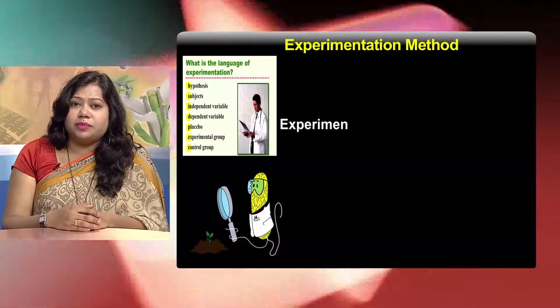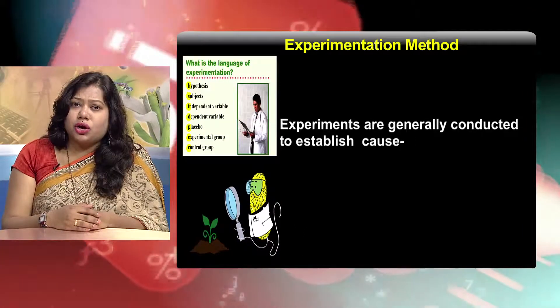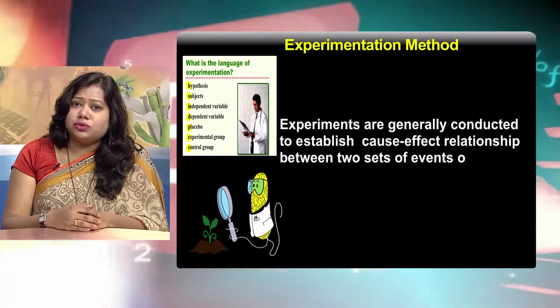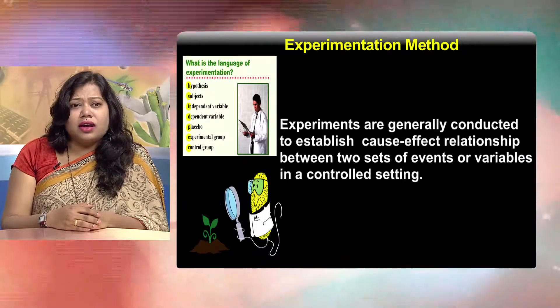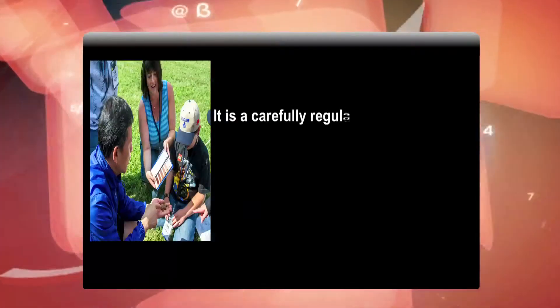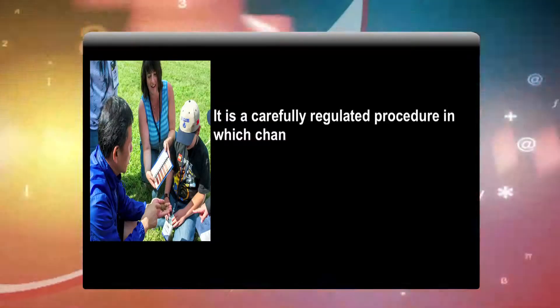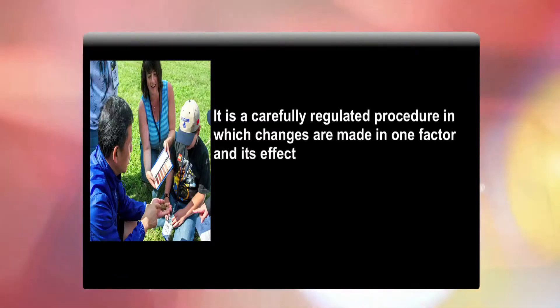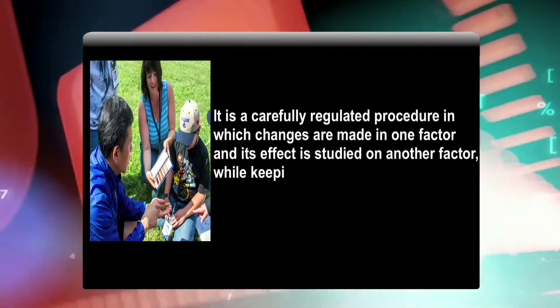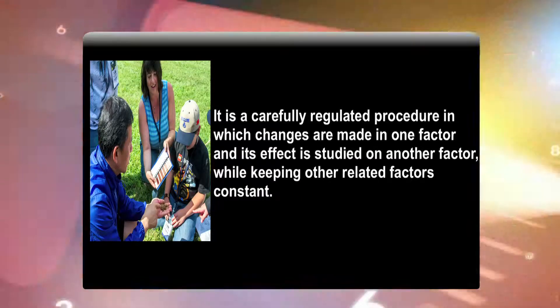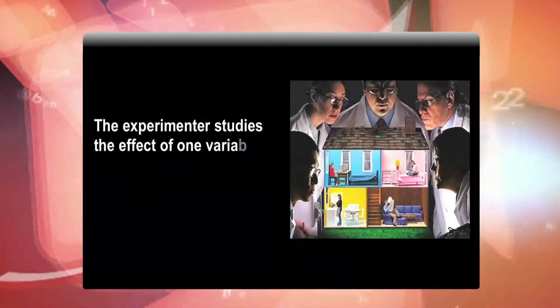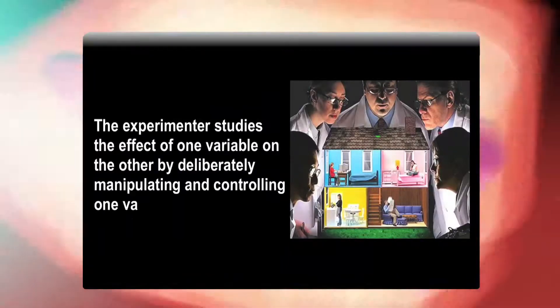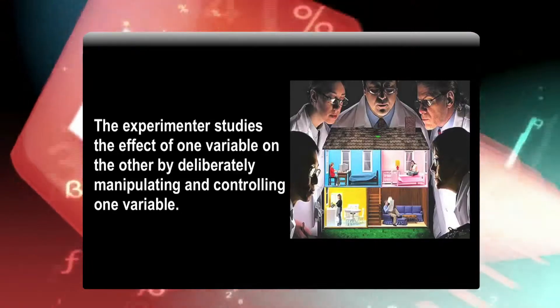Experimentation method. Experiments are generally conducted to establish a cause-effect relationship between two sets of events or variables in a controlled setting. It is a carefully regulated procedure in which changes are made in one factor and its effect is studied on another factor while keeping other related factors constant. In the experiment, the cause is the event being changed or manipulated, and the effect is the behavior that changes because of the manipulation.